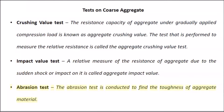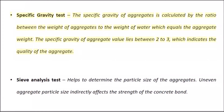Abrasion Test: Conducted to find the toughness of aggregate material. Specific Gravity Test: The specific gravity of aggregates is calculated by the ratio of the weight of aggregates to the weight of an equal volume of water; it lies between 2 to 3, indicating aggregate quality. Sieve Analysis Test: Helps determine the particle size of aggregates; uneven particle size indirectly affects the strength of the concrete bond.